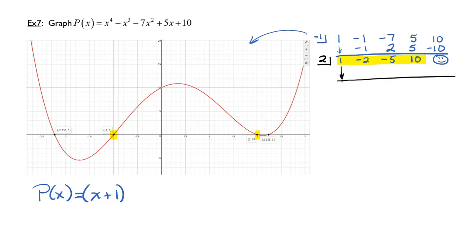Dropping the 1 down, I'm basically recycling my coefficients, and it's very convenient doing this. 2 times 1 is 2, negative 1 plus 2 is 0. 2 times 0 is 0. Negative 5 plus 0 is negative 5. 2 times negative 5 is negative 10. 10 plus negative 10 is 0. And so once again, I've proven that one of my factors is a 2.